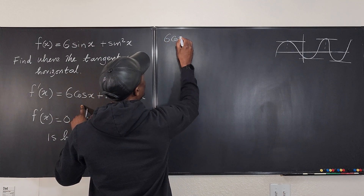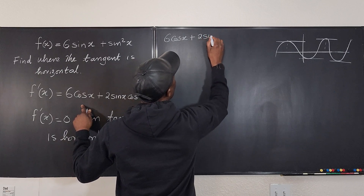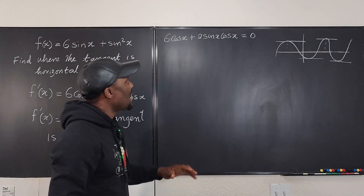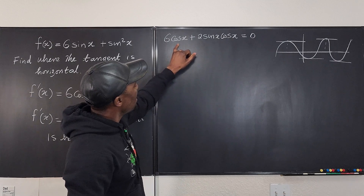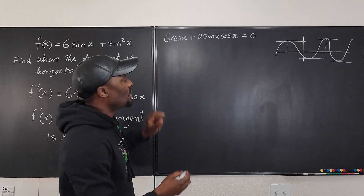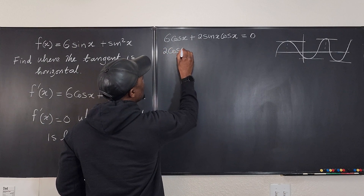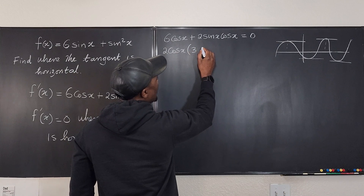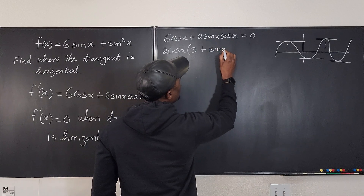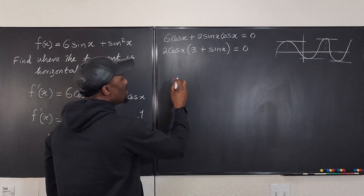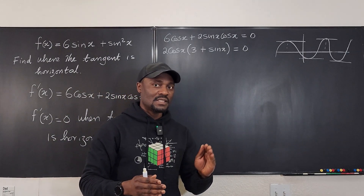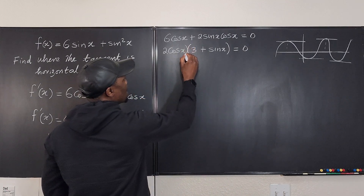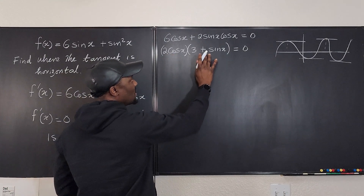So: six cosine x plus two sine x cosine x is equal to zero. We need to solve this and find the values of x. What's common to both terms? Cosine x and two are both present, so I'm going to factor out two cosine x. What's left is three plus sine x, equals zero. Remember, when the product of any two things is zero, one of them has to be zero or both have to be zero. So it's either this factor is zero or that factor is zero.